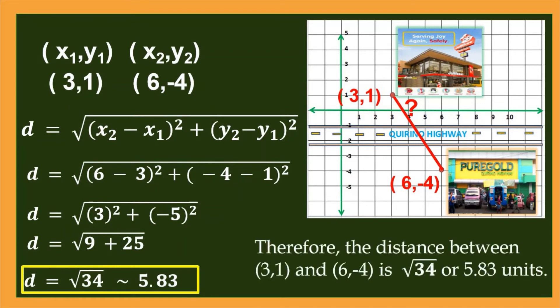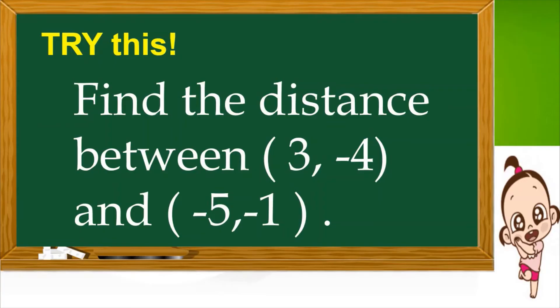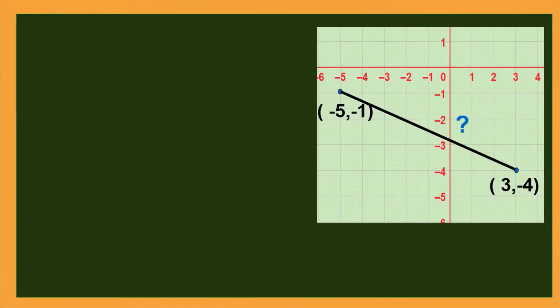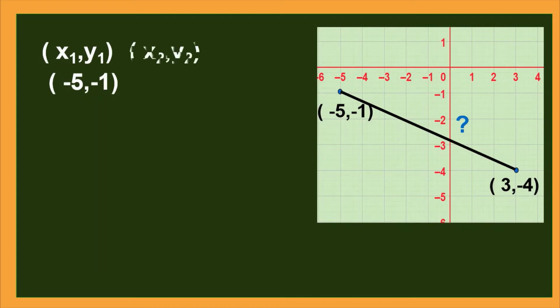So the distance between (0,31) and (6,-4) is the square root of 34, or approximately 5.83 units. You may try this one: find the distance between (0,3-4) and (0,5-1). You may pause the video before you check your answer. Here is the solution. Let x₁y₁ be (-5,-1) and x₂y₂ be (3,-4).